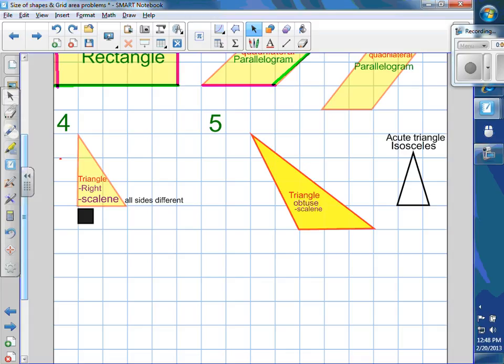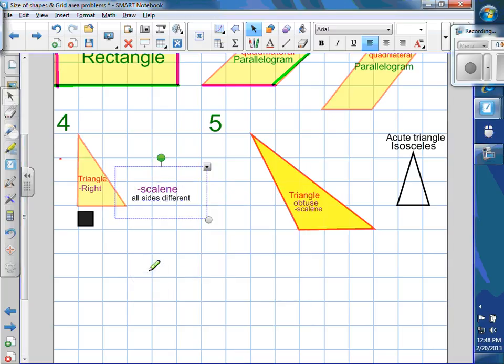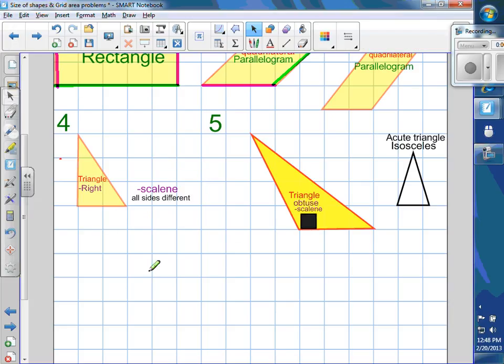So angles, the angle that you're talking about, that makes it a right triangle. But since all the sides are different, it's scalene. So scalene goes with all sides different. The tipped over that you're talking about, this makes it obtuse. It's obtuse because that angle is bigger than 90.